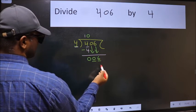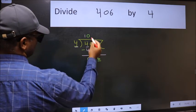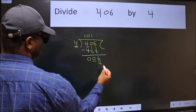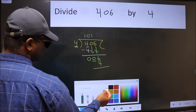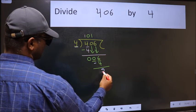Now 6. A number close to 6 in the 4 table is 4 ones 4. Now we should subtract. We get 2.